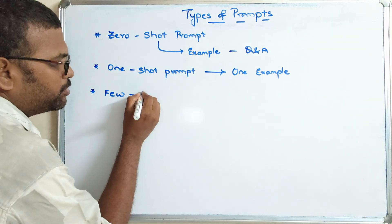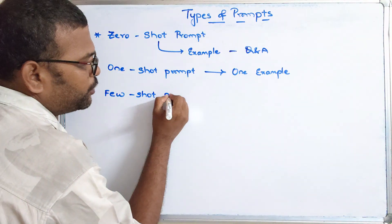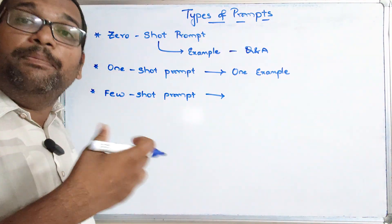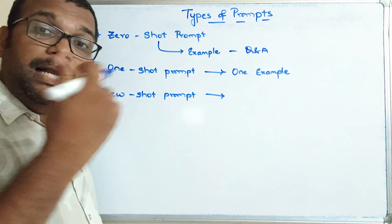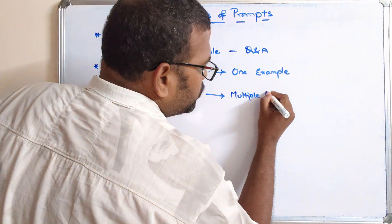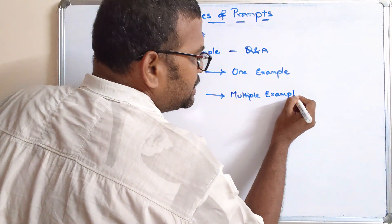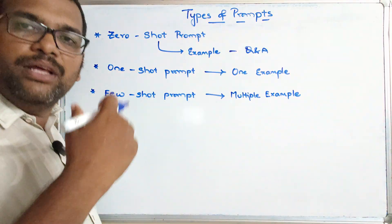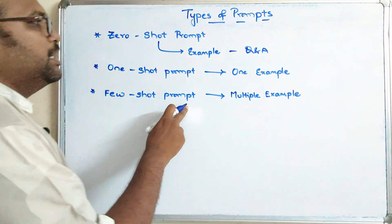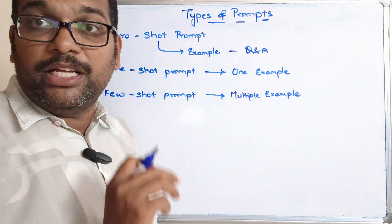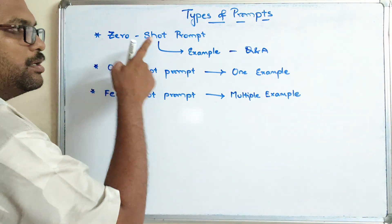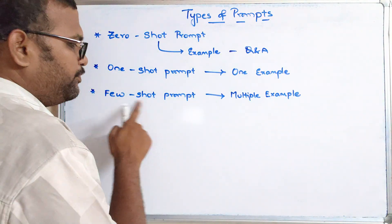Next is the few shot prompt. In this case we give multiple examples, not restricted to one. From those multiple examples it analyzes and produces the output. So: zero shot means zero examples, one shot means one example, and few shot means multiple examples.